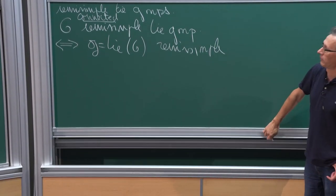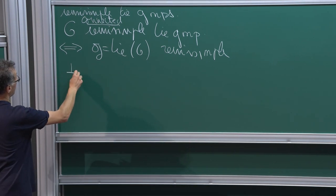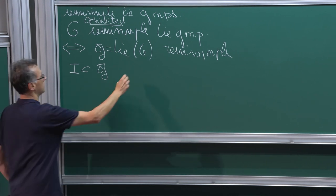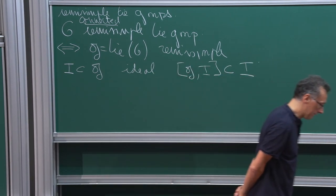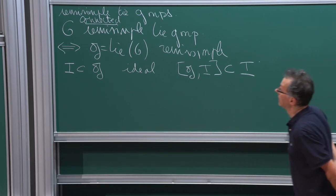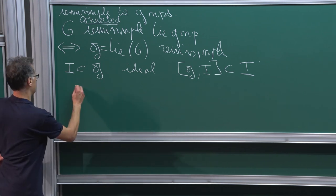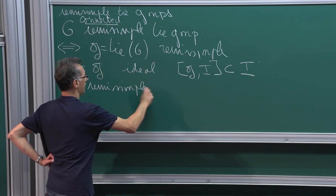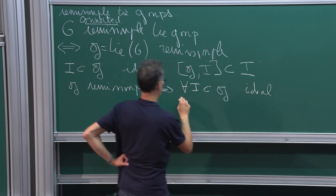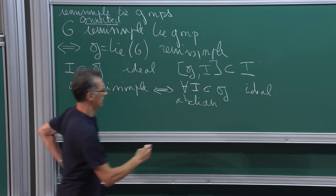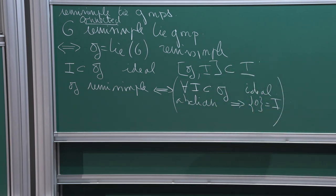The next question is: what is a semi-simple Lie algebra? I will give a formal definition. When you have a Lie algebra, you say that a sub-vector space I included in G is an ideal if, when you do brackets of elements of G and I, you still keep elements of I. Saying that G is semi-simple means that any ideal in G which is also abelian — meaning the Lie bracket restricted to I is trivial — is itself trivial. There is no abelian ideal in G.